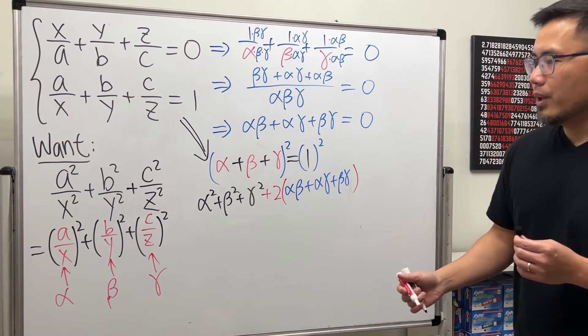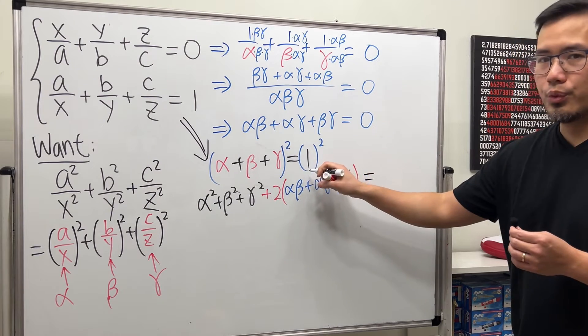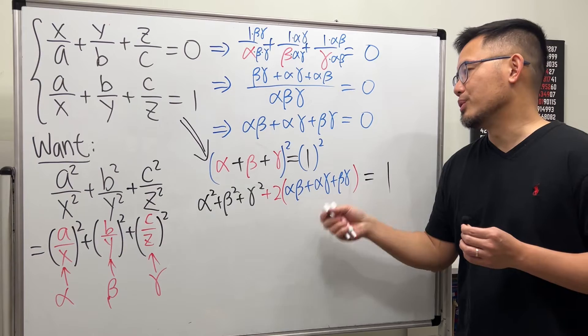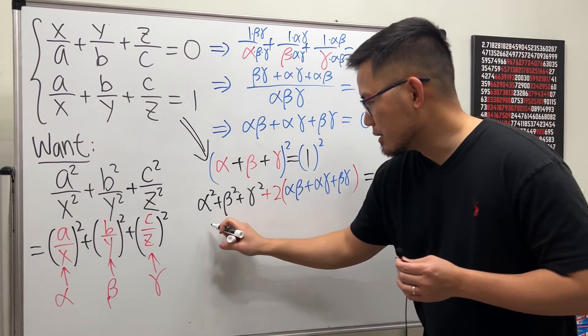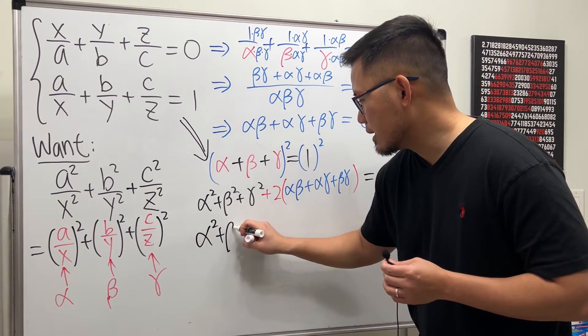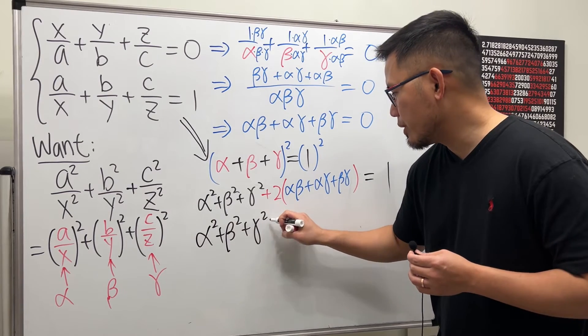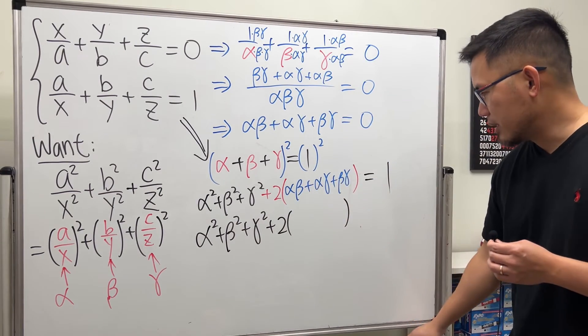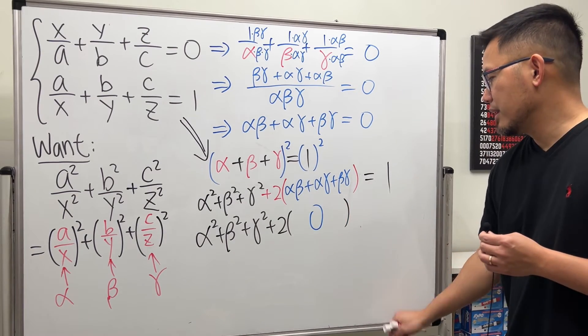Okay, well remember this right here is still equal to one squared which is just one. Now do we know this? Yes we do, that's equal to zero. So as you can see we have alpha squared plus beta squared plus gamma squared plus this right here is just two times this blue part is just zero and that's equal to one.